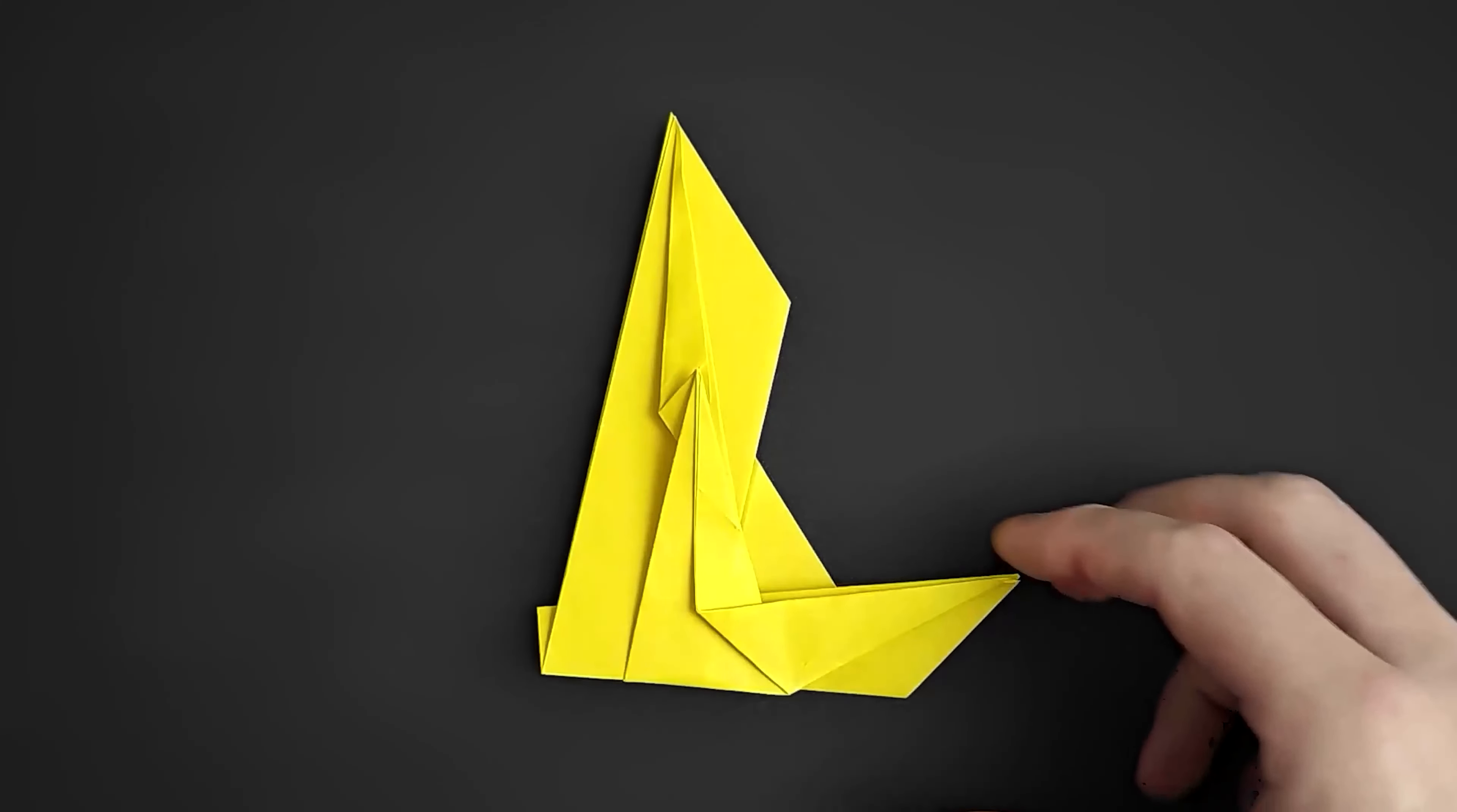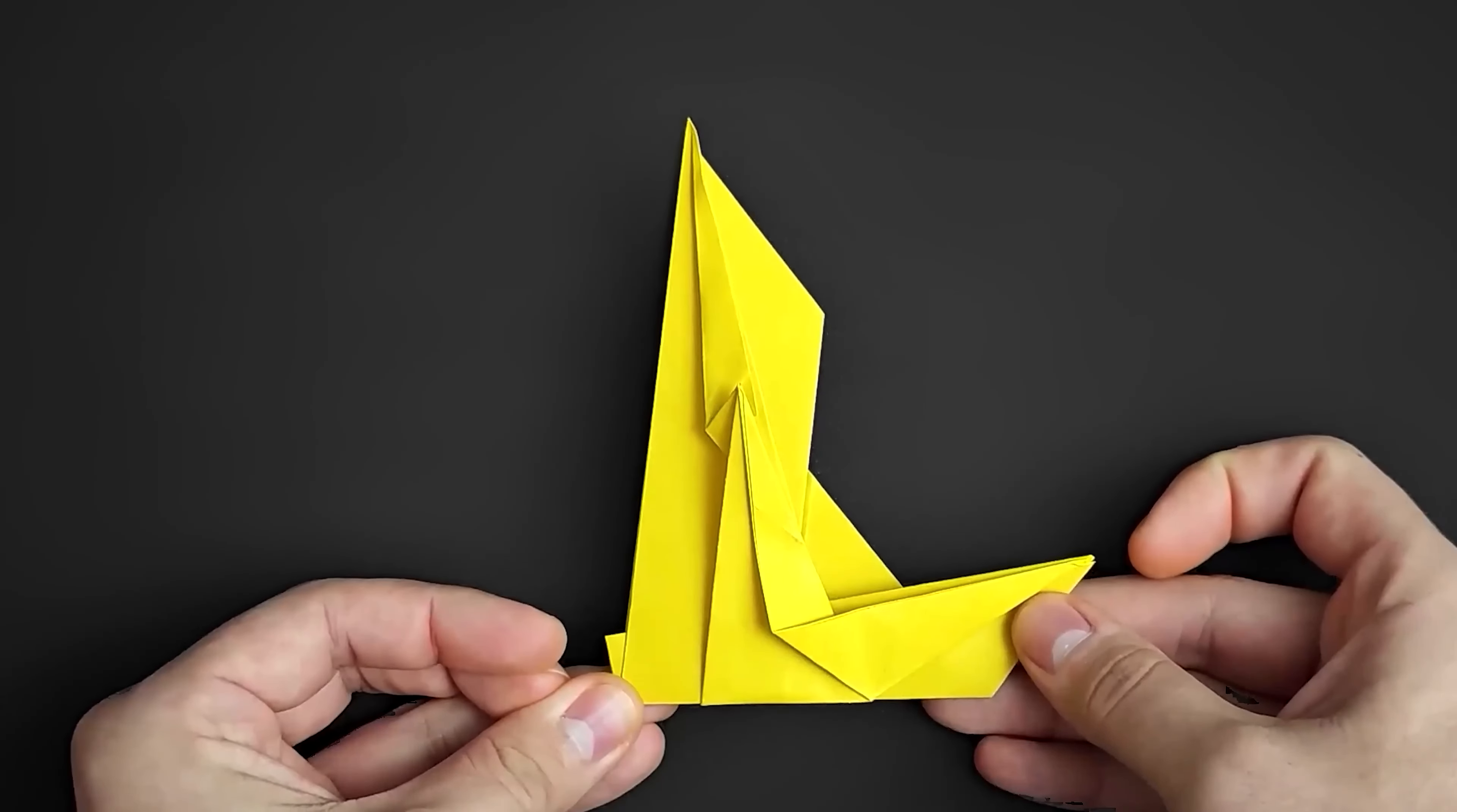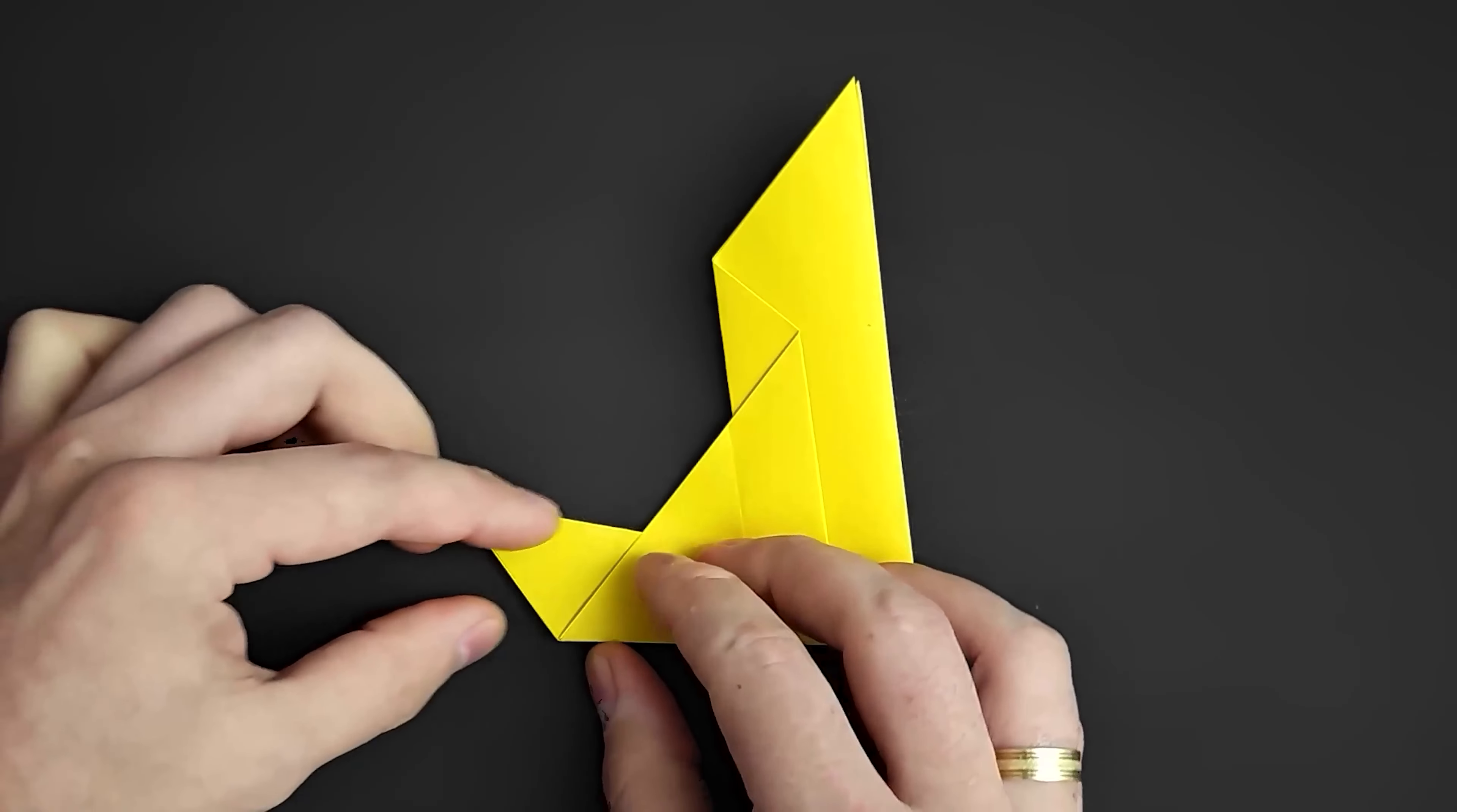We have the first wing. Let's go to the other side and repeat the same step. First fold the corner here.